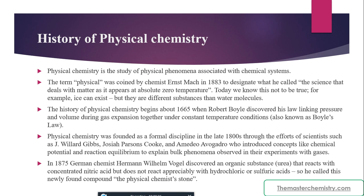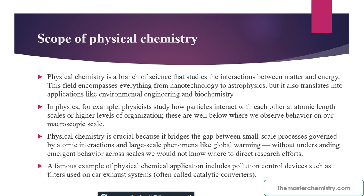In 1875, German chemist Hermann Vogel discovered an organic substance — urea — that reacts with concentrated nitric acid but does not react appreciably with hydrochloric acid or sulfuric acid, and he called this newly found compound the 'physical chemist stone.' With the invention of modern technology, physical chemistry has become more accessible; for example, the refinement and production of chemicals from crude oil to plastics is done on a large scale using knowledge from physical chemistry.